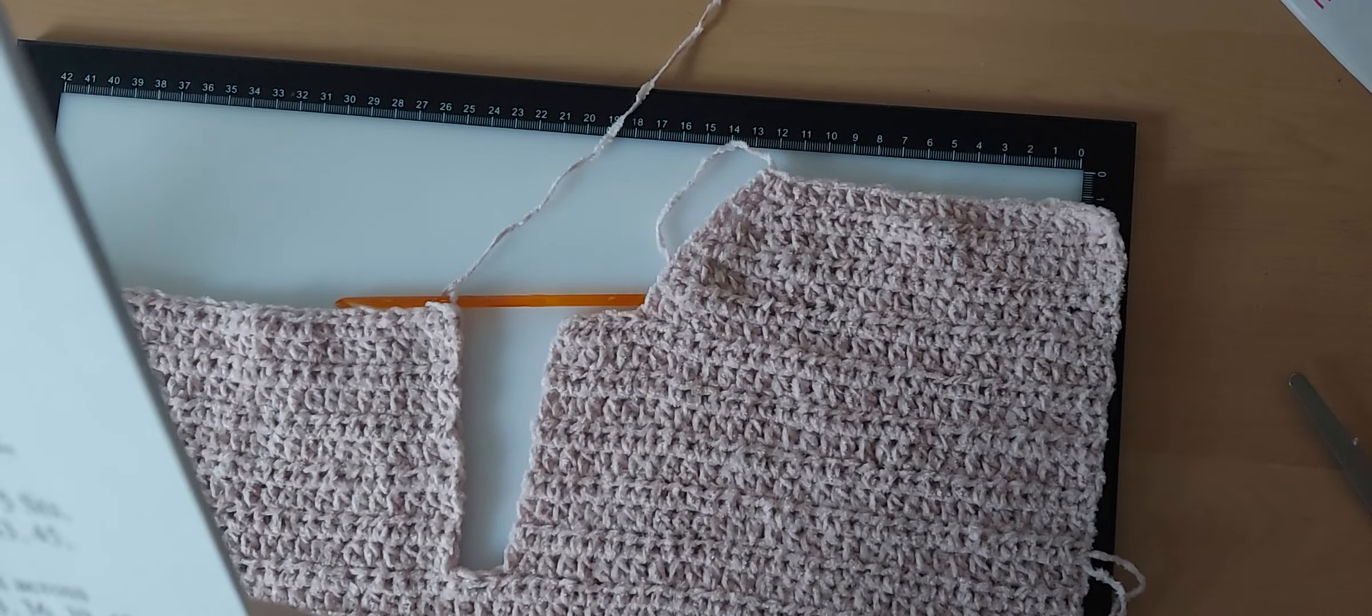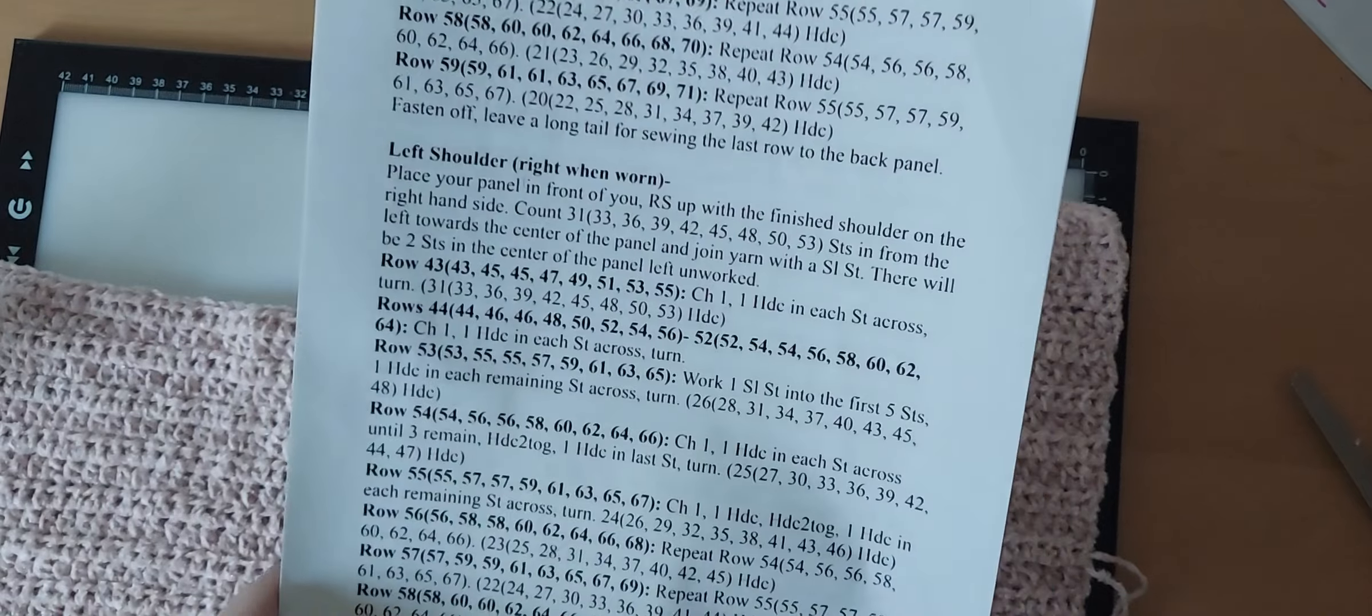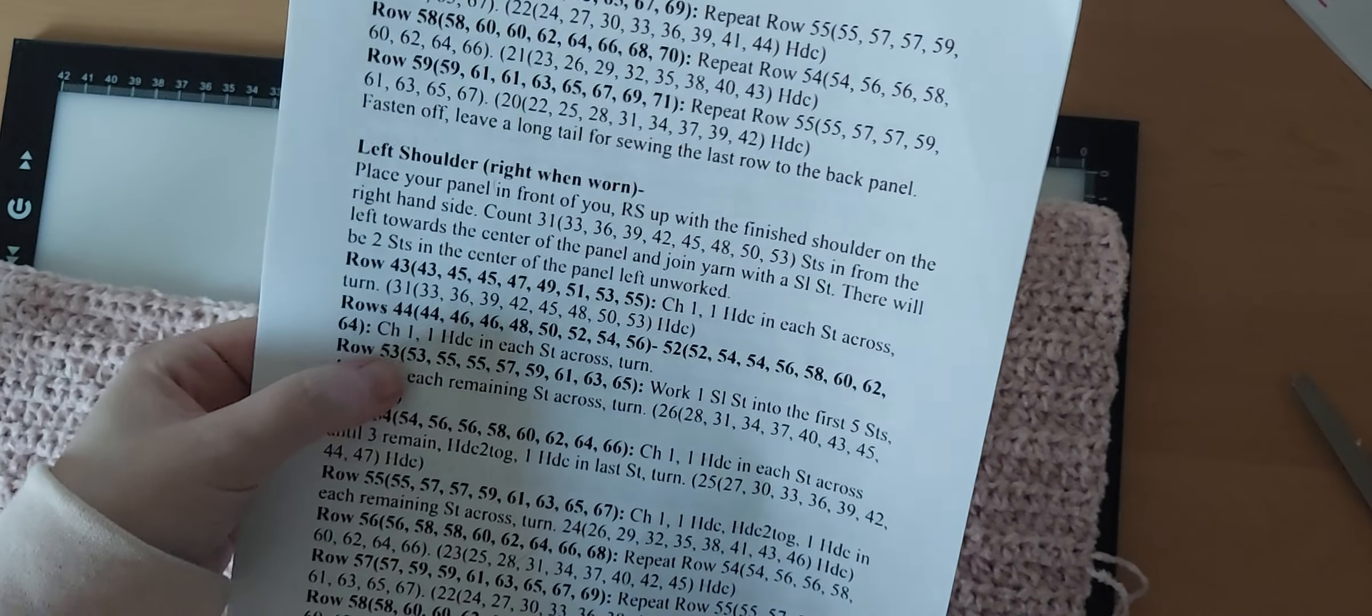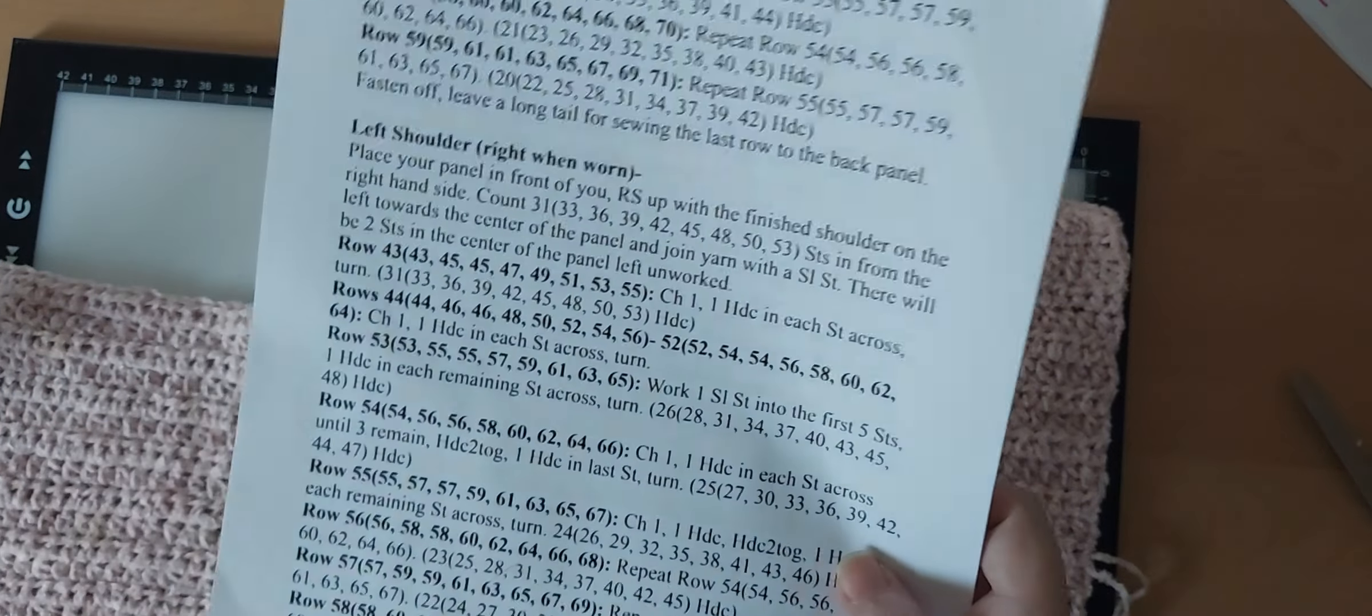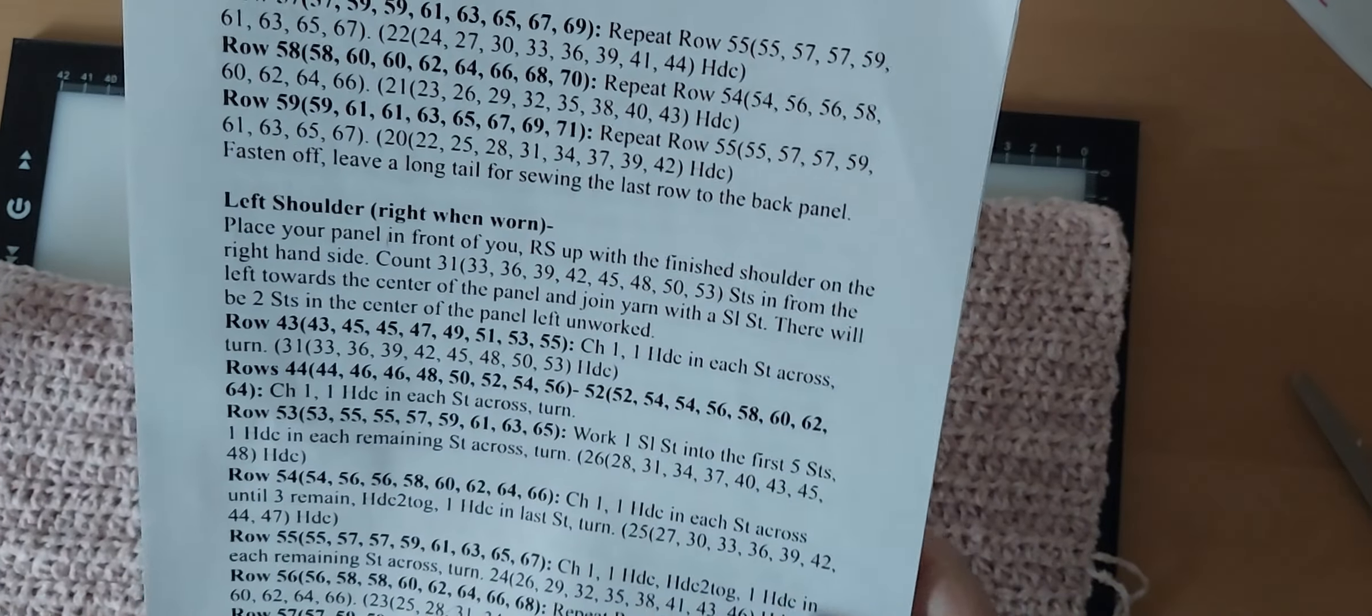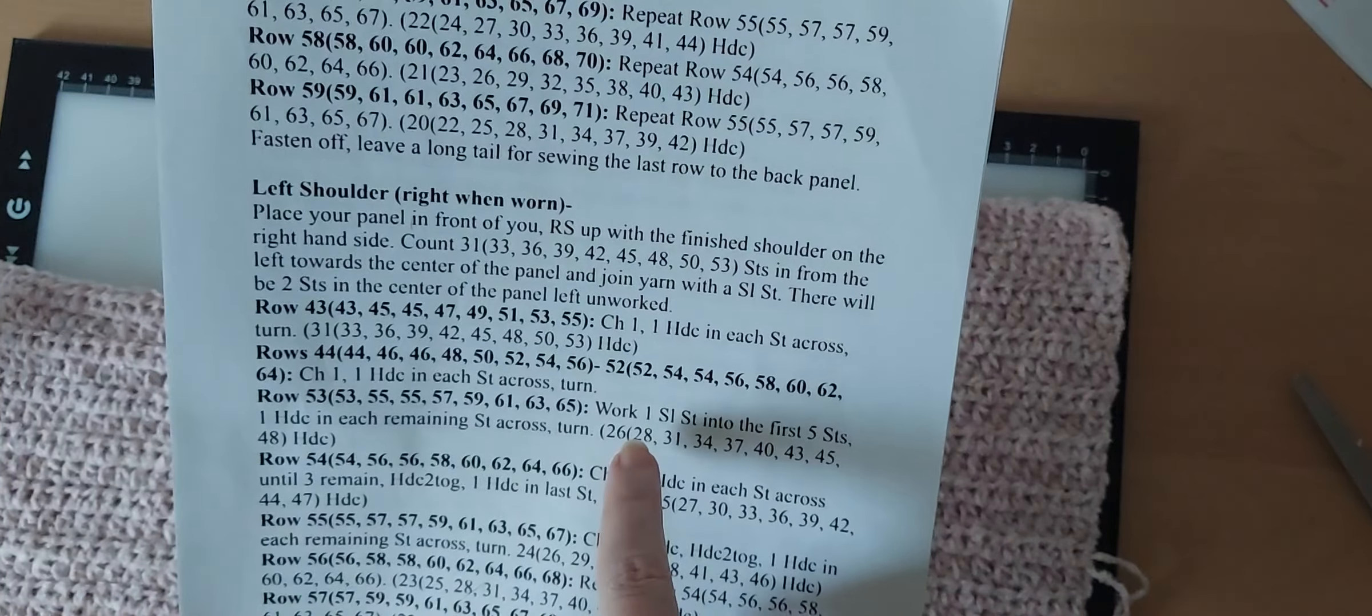So counting through the rows: 43, 44, 45, 46, 47, 48, 49, 50, 51, 52. Again, for me, row 53, for you it could be any of these depending on your size.